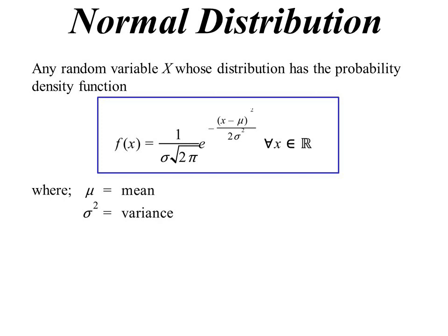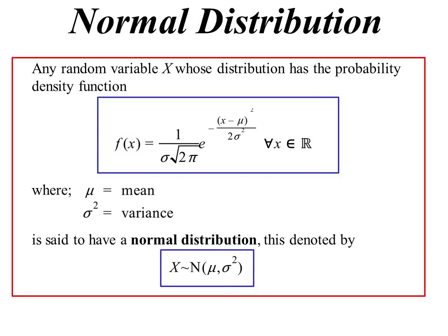We're more interested in just this notation down the bottom here. If something is normally distributed, this is how we denote it. Our random variable x, we use the tilde, that sort of thing is distributed, N normal. And then the two key pieces of information we're interested in, the average and the variance. So we put those in parentheses next to it. So that's how we say our random variable is normally distributed. We don't worry about writing down the actual density function.